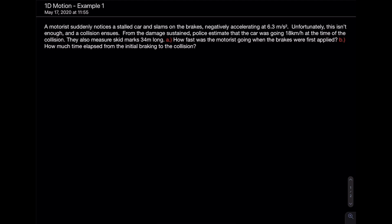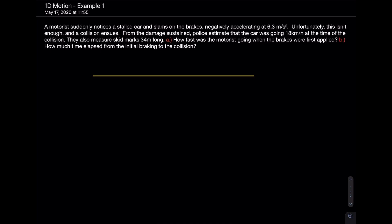So a motorist notices a car and slams on the brakes, skids, then hits the car — just one-dimensional motion. I'm going to choose the point when he initially hits the brakes as my origin, zero meters. So right here is when the motorist hits the brakes. The skid marks are 34 meters long, so we know he skidded 34 meters, and then right here is the collision. I'm going to choose rightward motion as positive and leftward motion as negative.